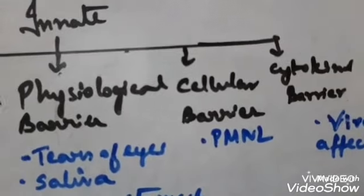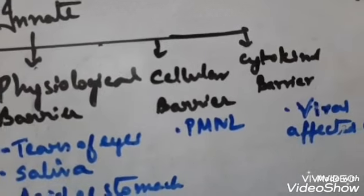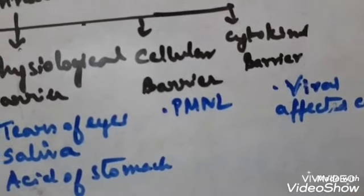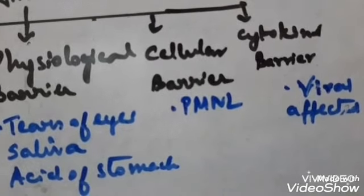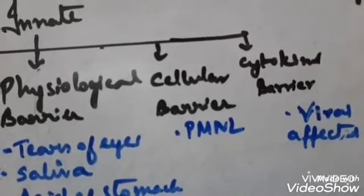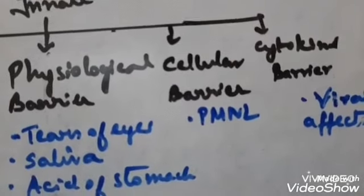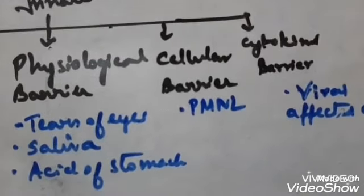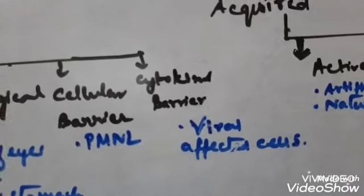Next comes the cellular barrier. These include special types of cells that kill disease-causing agents. The main cells are PMNL — polymorphonuclear leukocyte — which is a type of neutrophil (a type of WBC). There are also monocytes, natural killer cells (a type of lymphocyte), and macrophages in our tissues — all acting as cellular barriers.